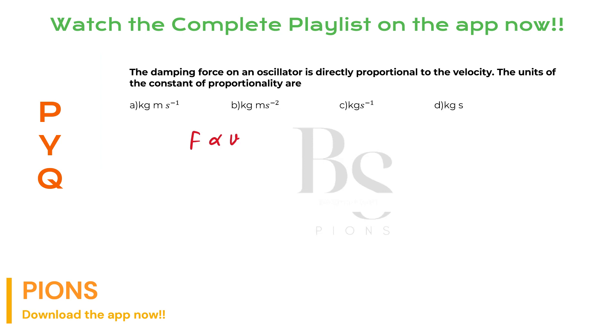So if you remove the proportionality sign, you will get a constant K times V. And this constant of proportionality will be the ratio of force upon velocity.